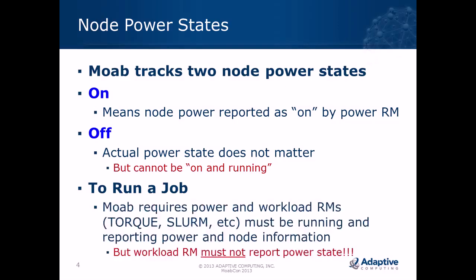To run a job, Moab requires that the power state be on and that the workload resource manager — whether it's Torque, Slurm, or anything else — must be running and must have reported node information. Power is reported by a power RM; node information by the workload RM. The workload RM must not report power state — that is really important, because some people have tried that and it won't work.